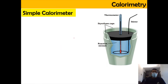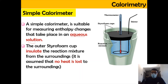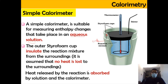The simple calorimeter is suitable for measuring enthalpy changes that take place in aqueous solution. It has an inner styrofoam cup as the first layer, and an outer styrofoam cup used to insulate the reaction mixture so that there is no heat loss to the surrounding. The heat released by the reaction is absorbed by the solution — which can be water — and also by the calorimeter.